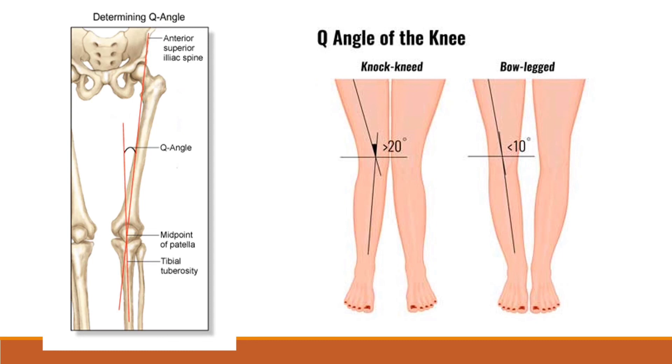If the Q angle is large, it indicates genu valgum or knock knee. If the Q angle is small, it indicates a varus knee or bow leg.